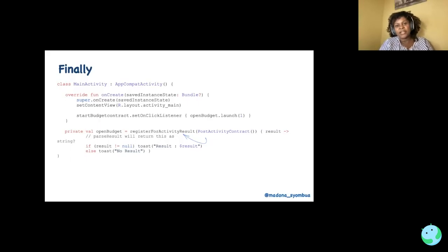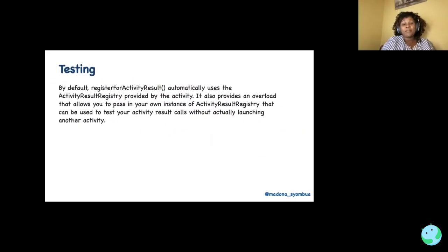So again, if you're into testing and you're wondering how would you test this? By default, register for ActivityResult automatically uses the ActivityResult registry provided by the activity. It also provides an overload that allows you to pass in your own instance of ActivityResult registry that can be used to test your ActivityResult call without actually launching another activity. So when testing your app's fragment, you need to just provide the ActivityResult registry. And definitely you get to learn a lot when you try new APIs.